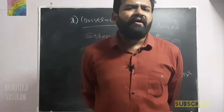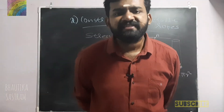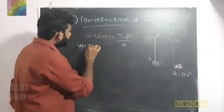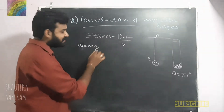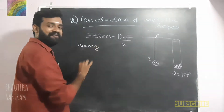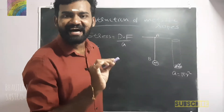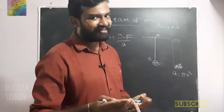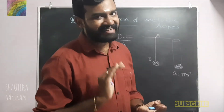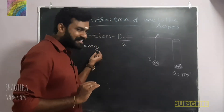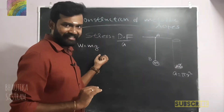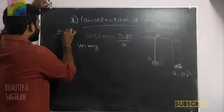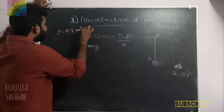Let's say the mass is M. There's a weight in the M class. W is equal to M into g, where g is the acceleration due to gravity. The acceleration due to gravity is 9.8 meters per second squared.